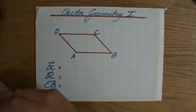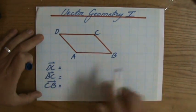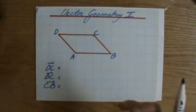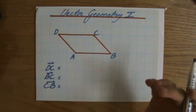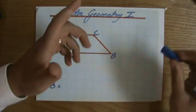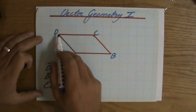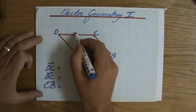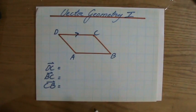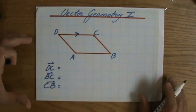You will understand vector geometry quite easily. The question is: give me another vector which is the same as DC. As you know, vectors have a magnitude and a direction. DC means from D to C. Which other line in my parallelogram has